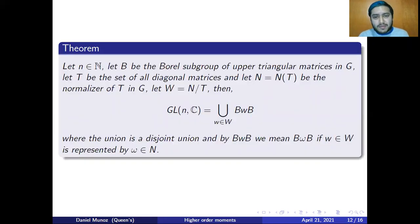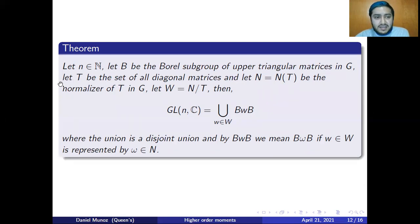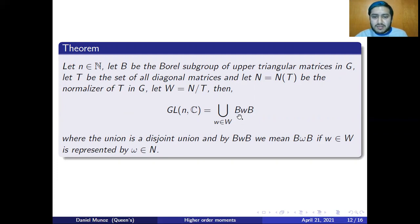Then I can establish the Bruhat decomposition theorem for the particular case when my group G is GL(n,C), the set of invertible matrices. Taking N as a natural number, B the Borel subgroup of upper triangular matrices, T the set of diagonal matrices, and N the normalizer of T in G, it can be proven that B, N, I is a Tits system of GL(n,C). Therefore, by the Bruhat decomposition theorem, GL(n,C) can be decomposed as a union of double cosets BWB, where W runs over all elements in the Weyl group and B is the Borel subgroup of upper triangular matrices.